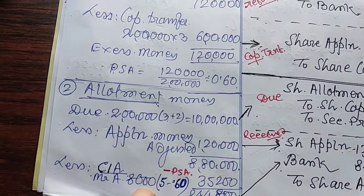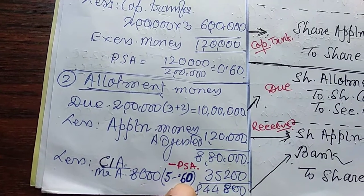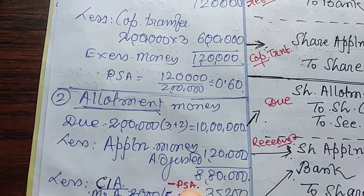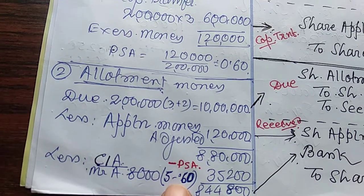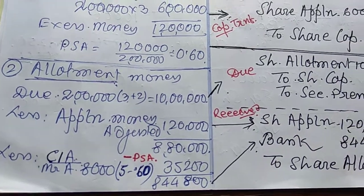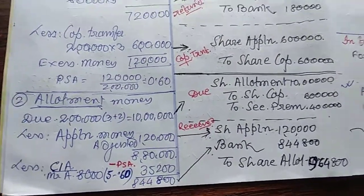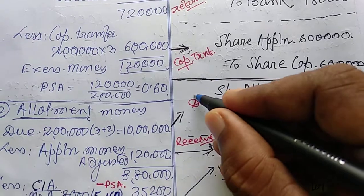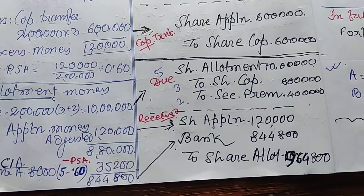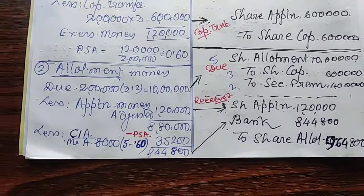Mr. A failed on 8,000 shares. At the rate of Rs. 5 allotment, but he has already paid Rs. 0.60 with the application — that is PSA — so minus PSA applies here. PSA works out to Rs. 35,200 and the actual receipt is Rs. 8,44,800. Journal: share allotment debit to share capital Rs. 3 and security premium Rs. 2 (total Rs. 5 per share for 2 lakh shares), application to allotment Rs. 1,20,000, and bank amount as calculated in workings.